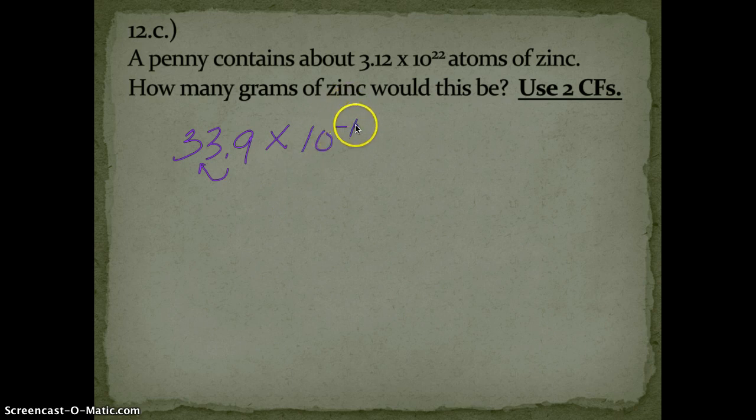If I move my decimal to the left, making my coefficient smaller by one power of 10, I've got to make this negative zero a one, or negative one zero. So it's really just going to end up as 3.39 grams of zinc.